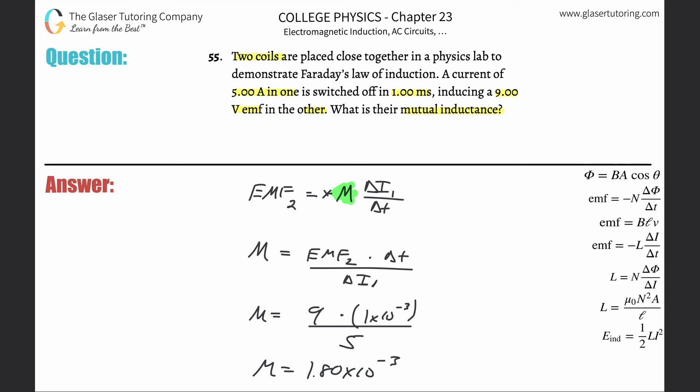So this is going to be 1.80 times 10 to the negative three. The units here for inductance are going to be Henrys. I wonder who discovered inductance.